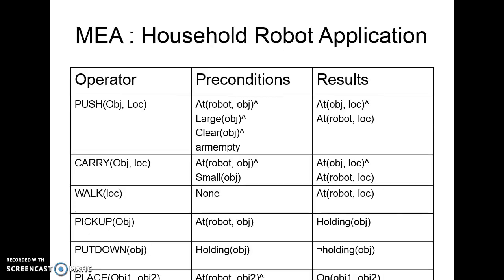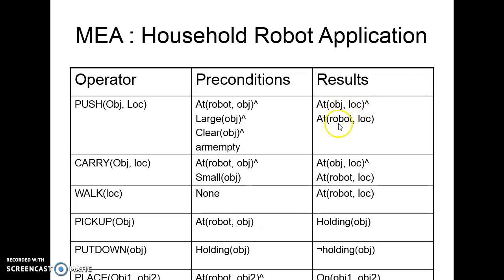What operations are available? We have a push operation, where an object is moved to a specified location. The preconditions for push are: the robot must be at the location of the object, the object must be large so it cannot be picked up, the object must be clear, and the robot's arms must be empty. The result of push is that the object will be at the desired location and the robot will also be at that location.